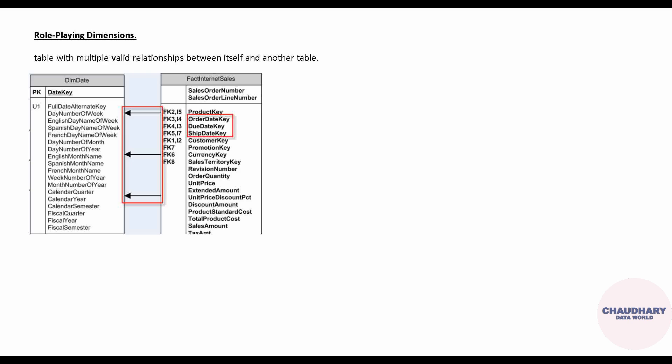Moving ahead with another one: the role-playing dimension. It is a very good practice if you are aware of role-playing dimensions and apply them in your project. Suppose you have a date column, and there are varieties of date columns in your fact table. For example, in a fact internet sales table, it might have order date, due date, and ship date — all date fields.